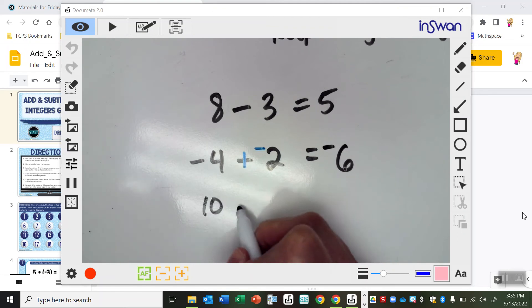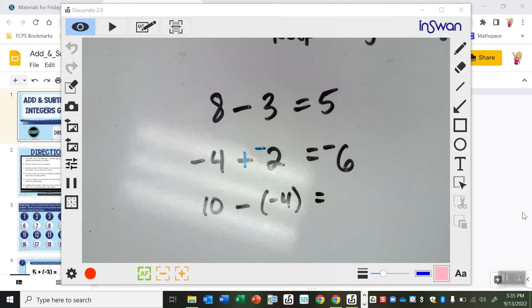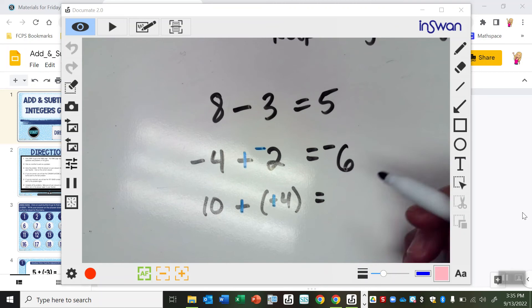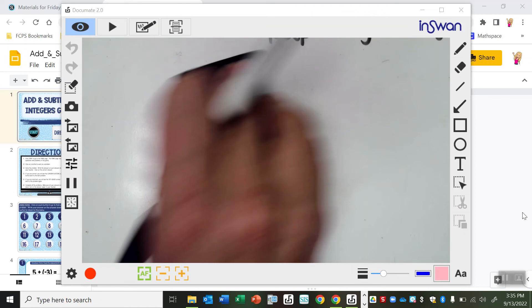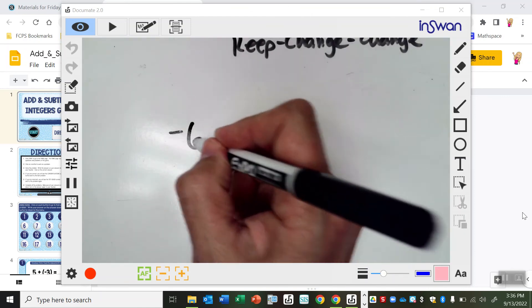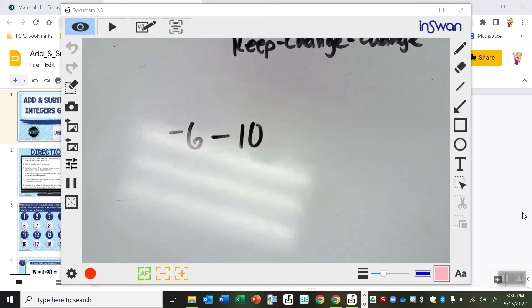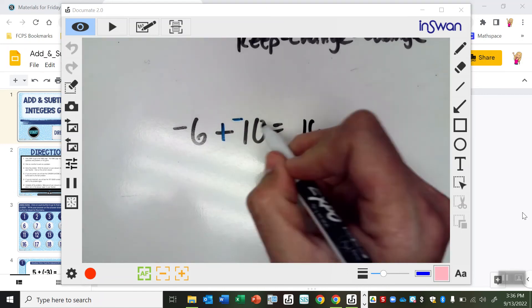All right, so let's do another. 10 minus negative 4. So I have subtraction. That's kind of weird to me. I don't know what it means. So I do keep, change, change. So, 10 plus 4, 14. All right, so let's do a couple more of those. Let's say I have, like, negative 6 minus 10. So keep, change, change. So it's just negative 6 plus negative 10. They're both negative, so they grow together to be 16, and they're negative, so it stays there.